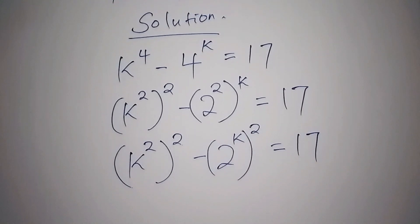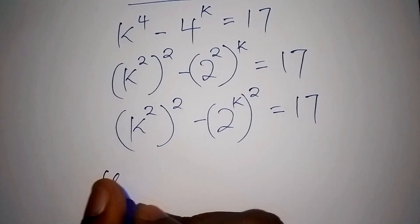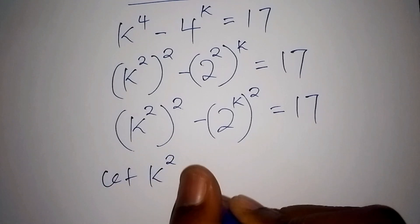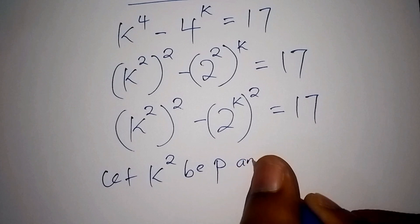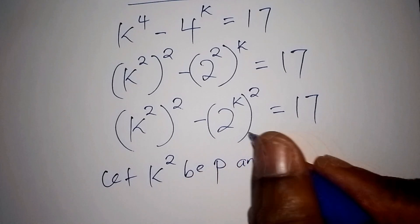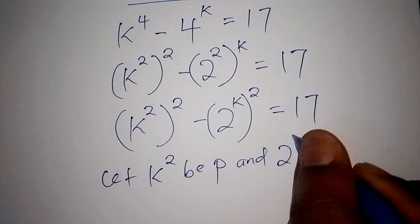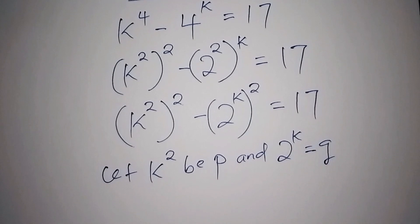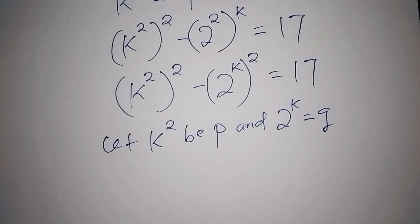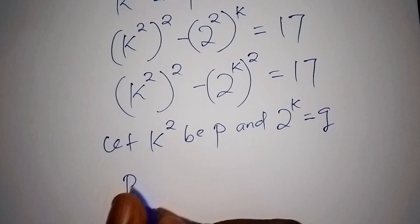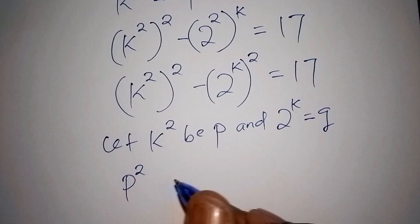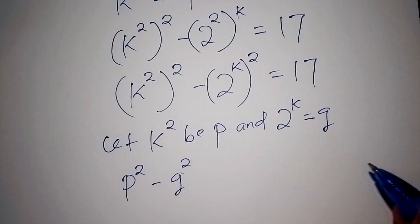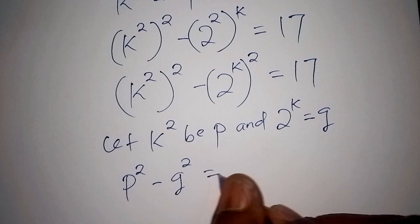The next step is to rewrite it having k squared in bracket 2, then minus — we bring the k inside the bracket — so 2 to the power of k, in bracket 2, equals 17. Now let k squared be p, and let 2 to the power of k be q. So we now have the equation p squared minus q squared equals 17.